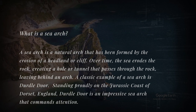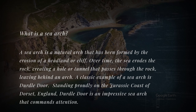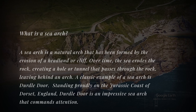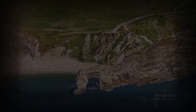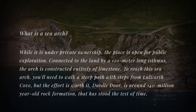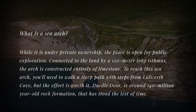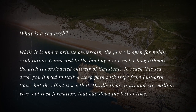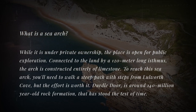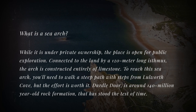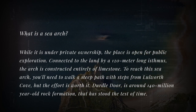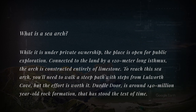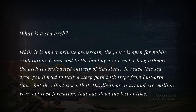A classic example of a sea arch is Durdle Door. Standing proudly on the Jurassic Coast of Dorset, England, Durdle Door is an impressive sea arch. While it is under private ownership, the place is open for public exploration. Connected to the land by a 120-meter-long isthmus, the arch is constructed entirely of limestone. To reach it, you'll need to walk a steep path with steps from Lulworth Cove, but the effort is worth it. Durdle Door is around 140 million years old.